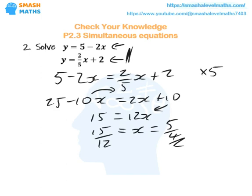All we need to do now is find y. So I'm going to go back to my top equation, y equals 5 minus 2x. So y is going to be 5 minus 2 lots of 5 over 4.